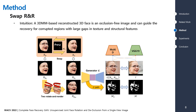The second 3D face RP is created by projecting pixels of the input image onto the estimated 3D shape. Then, we coarsely calculate the mask for the occlusion area. We will explain this in the next slide.